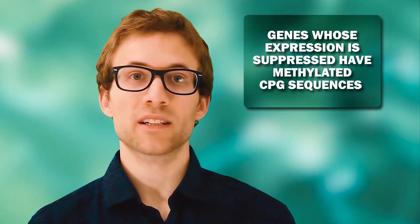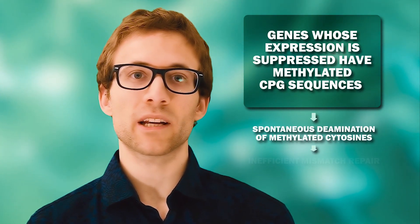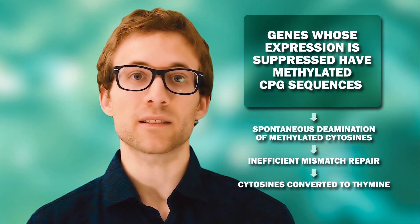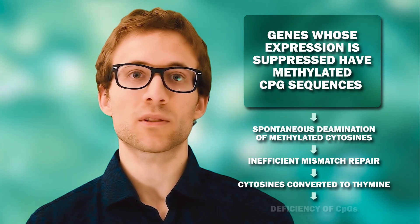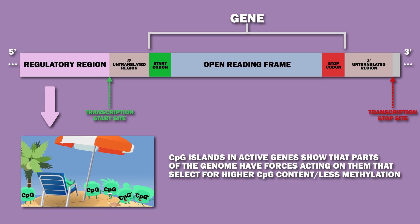Genes whose expression is suppressed have methylated CpG sequences, so the deamination cytosine massacre begins, and over evolutionary timescales this eventually leads to the observed deficiency of CpGs in these inactive genes. On the other hand, the existence of CpG islands in active genes means that these parts of the genome have forces acting on them that select for higher CpG content and less methylation in an area.